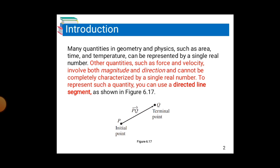Many quantities in geometry and physics, such as area, time, and temperature, can be represented by a single real number. Other quantities, such as force and velocity, involve both magnitude and direction and cannot be completely characterized by a single real number. To represent such a quantity, you can use a directed line segment, as shown in Figure 6.17.